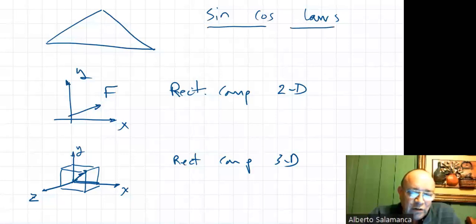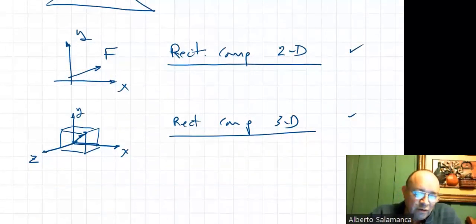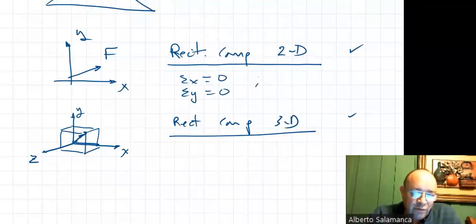Let's talk about sine cosine laws, and then a little bit about how to get components and how to compose in 3D. Once you have your components, you do summation of forces in the x direction equals zero and summation of forces in the y direction equal to zero for equilibrium problems.